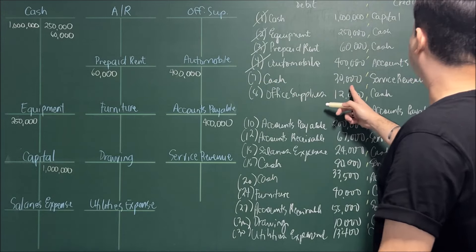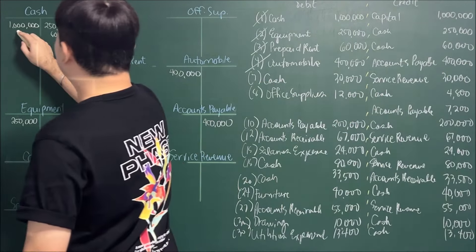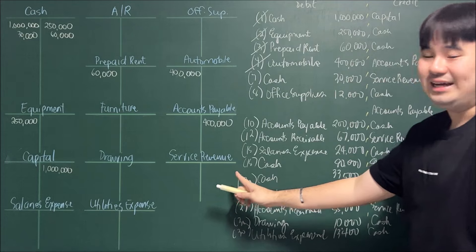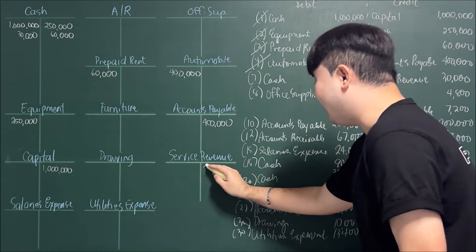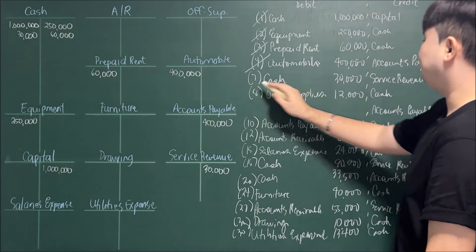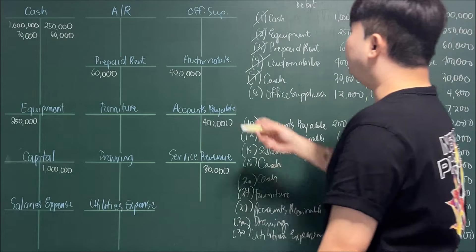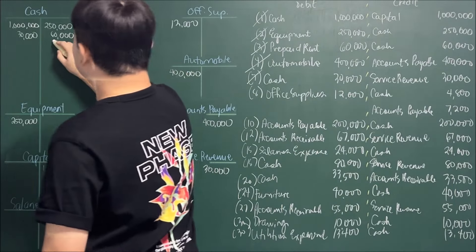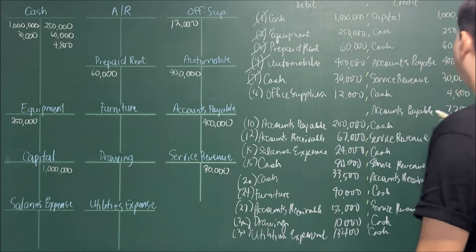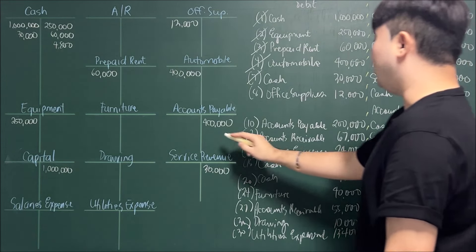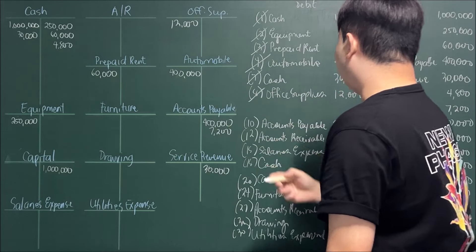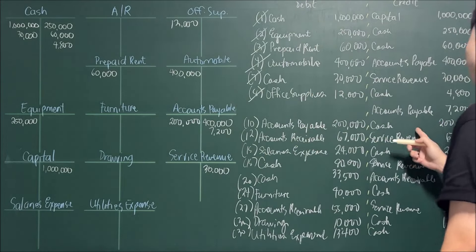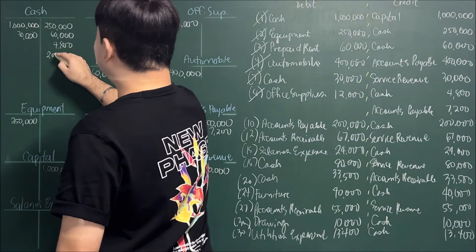April 7: debit Cash 30,000, credit Service Revenue 30,000. April 8: debit Office Supplies 12,000, credit Cash 4,800, credit Accounts Payable 7,200. April 10: debit Accounts Payable 200,000, credit Cash 200,000. April 12: debit Accounts Receivable 67,000, credit Service Revenue 67,000. April 15: debit Salaries Expense 24,000, credit Cash 24,000.